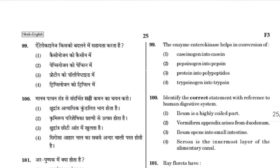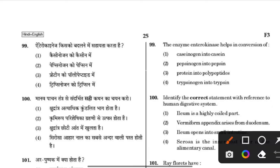The enzyme enterokinase helps in the conversion of trypsinogen into trypsin.